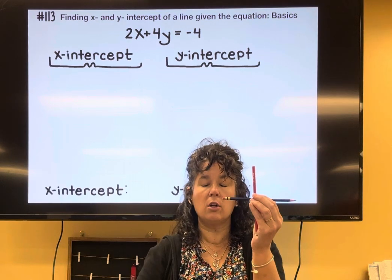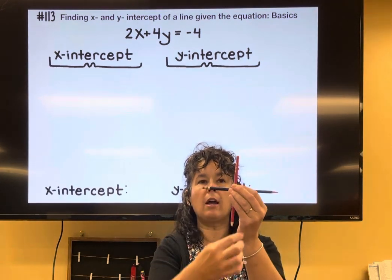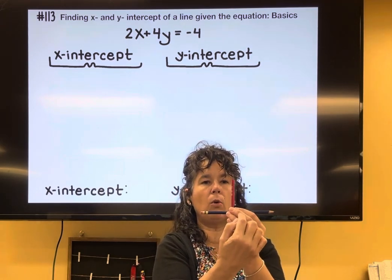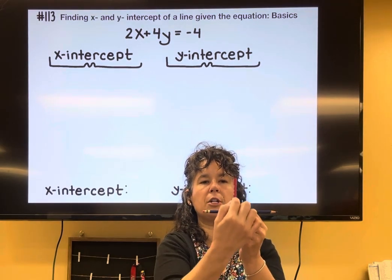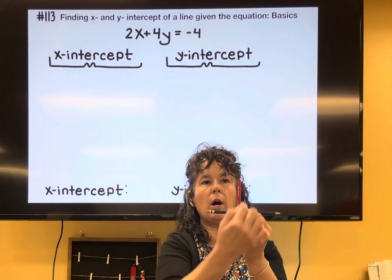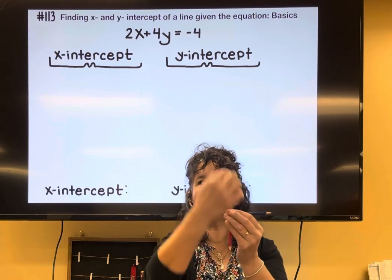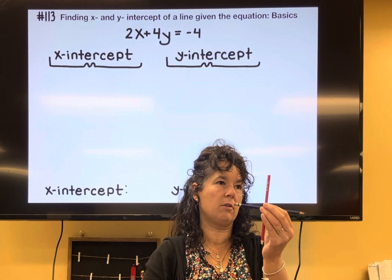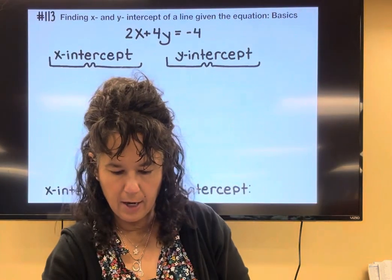which is why we are going to replace the y with zero to find an x-intercept. If you think about every single point that's on the y-axis, I might plot the point right or left 0 up 1, so 0, 1. Or right or left 0 up 5, so 0, 5. Every single point that's on your y-axis, the x-coordinate is 0.